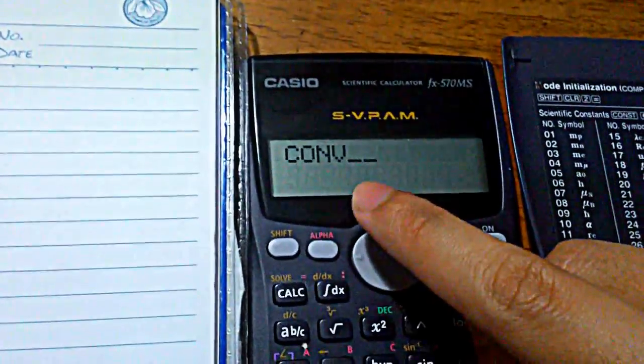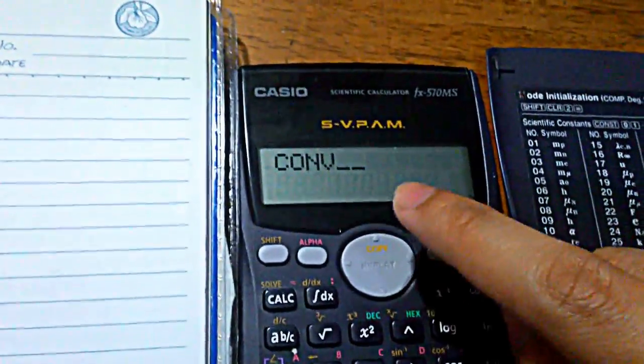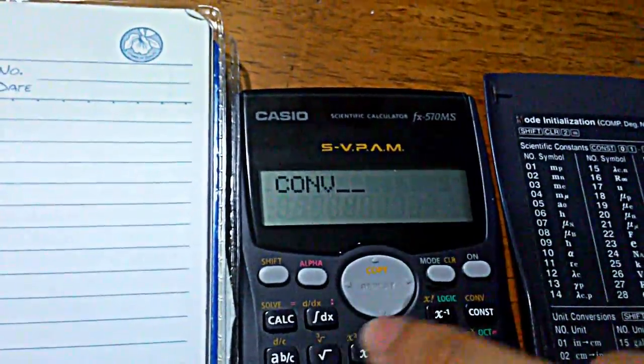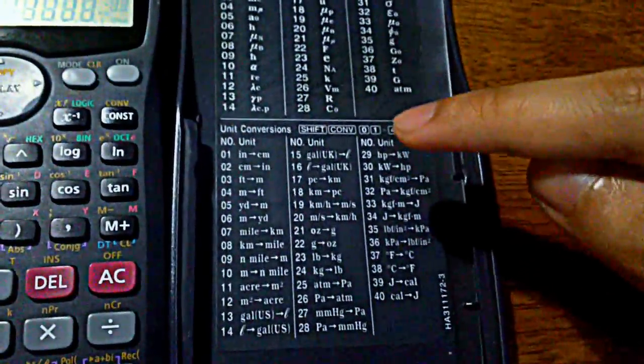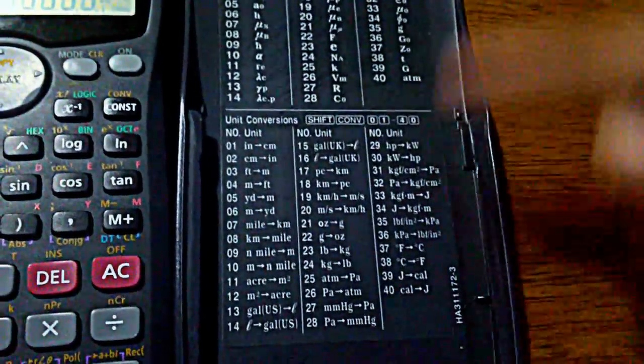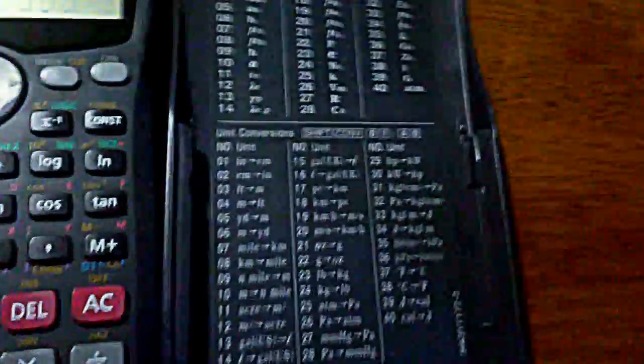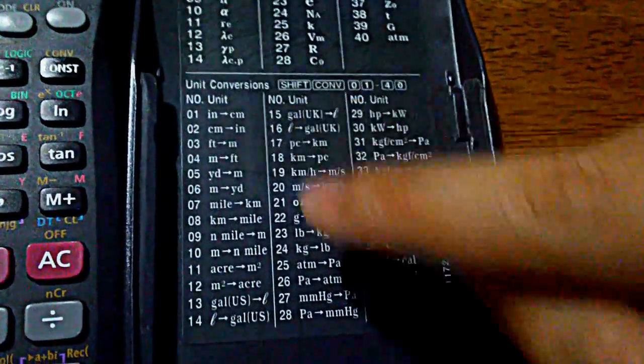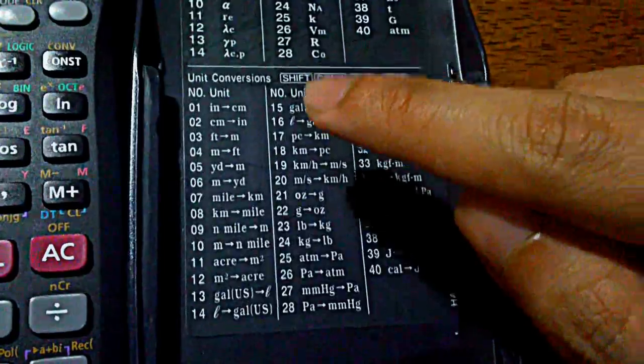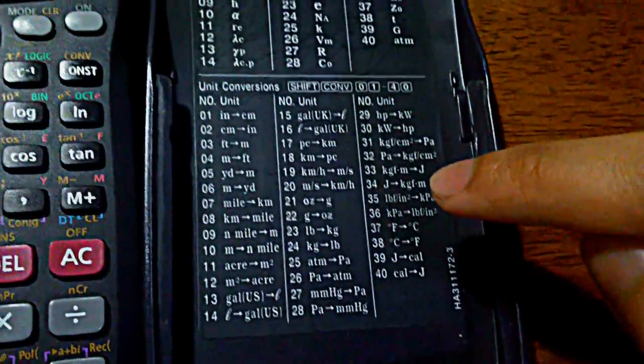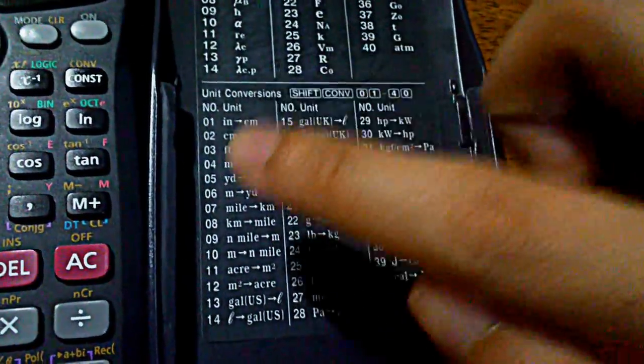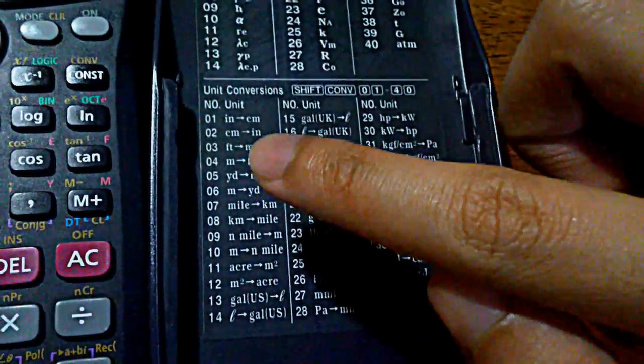Appearing on the screen is CUNV followed by two spaces. The two spaces correspond to the code for the conversion that you'd like to achieve. To get to that code, you have your calculator cover that should show a table, basically an index of the conversions that you can go through. You have here from 01 all the way to 40. You can convert between distances, area, weight, even temperature. For our case, we'd like to convert between meters and feet. As you can see, that's number four.